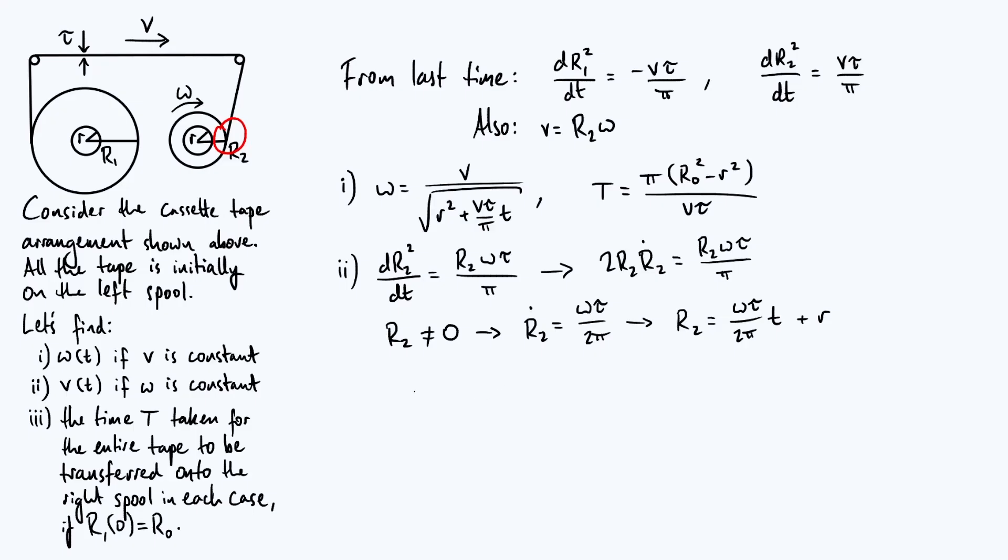Our goal was to come up with an expression for v as a function of t. That's really easy to do because v is R2 omega. We have our expression for R2. So I'll just copy and paste that. And we just need to multiply the whole thing by omega. So I'll put an omega there, put that whole thing in brackets. And there's our expression for v as a function of time. Now for finding the total time elapsed while the cassette plays, remember the method was to say that R2 at the final time capital T is R0 because the entire tape has been moved to the right-hand side. Let's go back to this equation and plug that condition in. So we just get R0 equals omega tau divided by 2 pi times capital T plus small r.